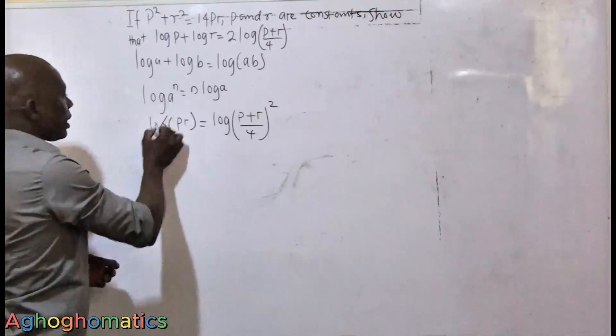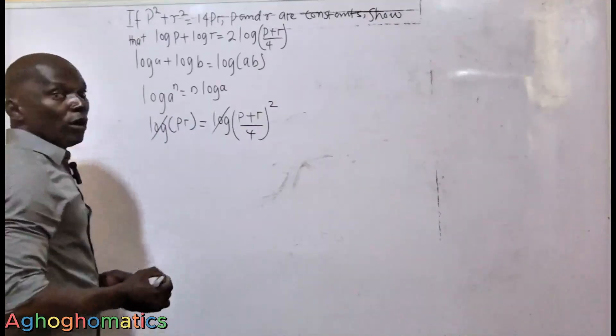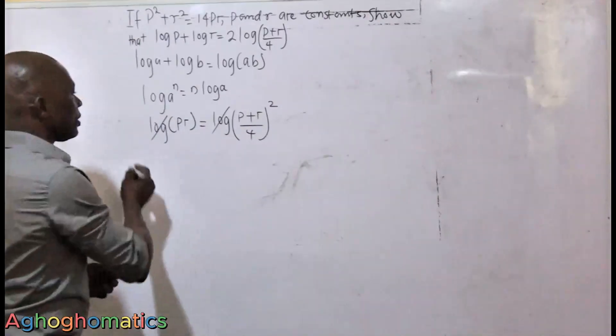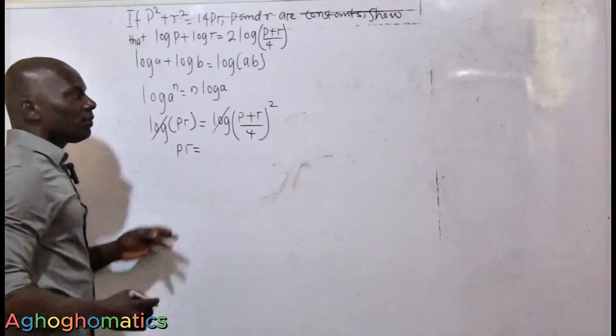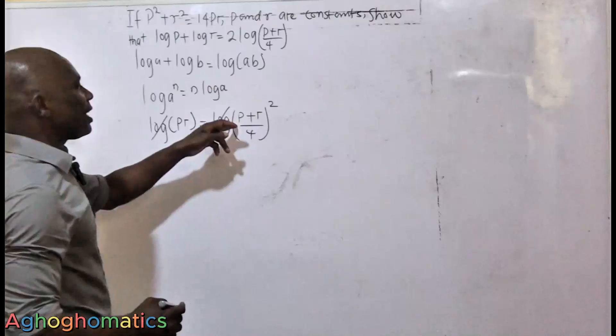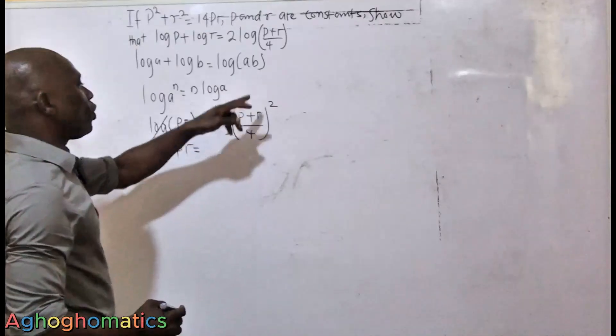Now here, the logarithm can easily go off, so that we have PR on the left-hand side, while the right-hand side is (P plus R over 4) squared.